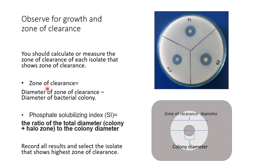Zone of clearance is calculated as the diameter of the zone of clearance minus the diameter of the bacterial colony. You measure the total diameter of the clear zone and subtract the diameter of the bacterial colony to get the actual zone of clearance.